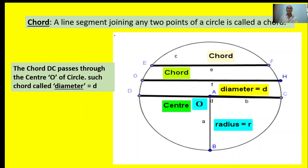Here, DC is a diameter, denoted by d. GH and EF are chords. AB is a radius, and O is the center point.